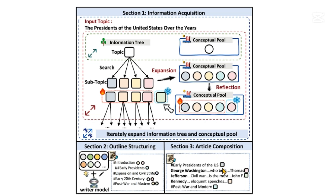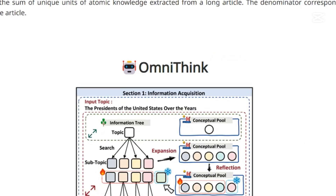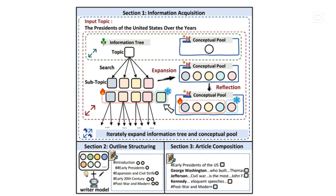The third step is article composition. At this stage the LLM works in parallel to write content for each section. While writing, it uses the titles of each section and their hierarchical structure to retrieve the most K relevant documents from the information tree by calculating the semantic similarity. This is the core concept of OmniThink.